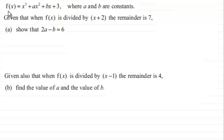What we've got here is that f(x) equals x cubed plus ax squared plus bx plus 3, where a and b are constants. And given that when f(x) is divided by x plus 2 the remainder is 7, we've got to show that 2a minus b equals 6.